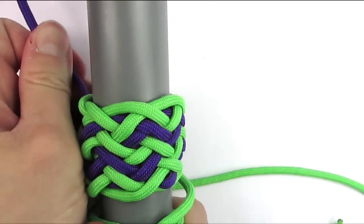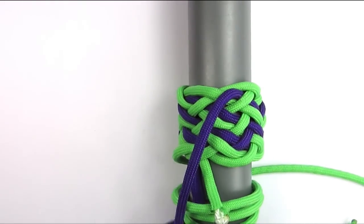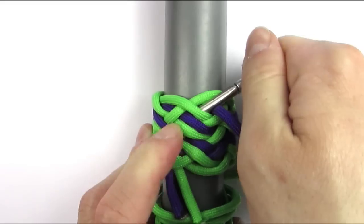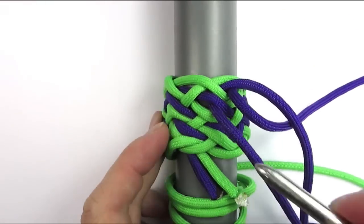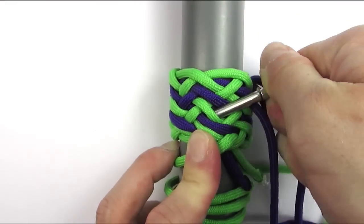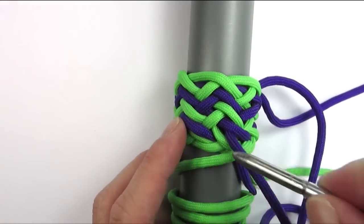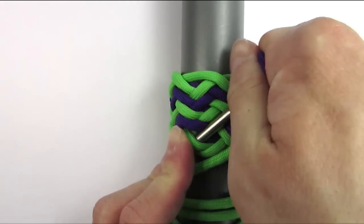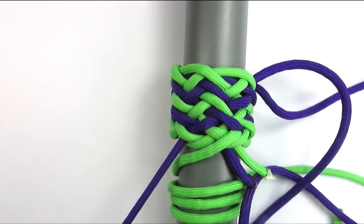We are going to use the final sequence now, which is going to be under 2, over 2, under 2. You can see that I am struggling a bit here to get the cords through. And over 2 and under 1. And this is the basic sequence we are going to repeat three times to finish the knot.